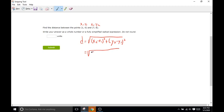x2 is going to be 7 and then minus 1 squared plus y2 is 8 minus 0 squared. Okay. 7 minus 1 is 6 and 6 squared is going to be 36 plus. 8 minus 0 is 8 and then 8 squared is 64. Okay.